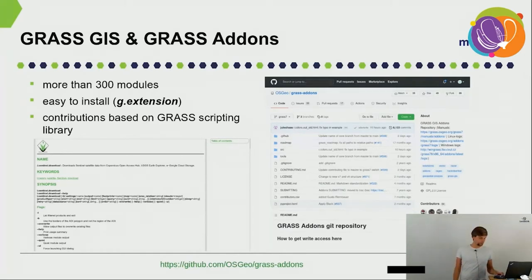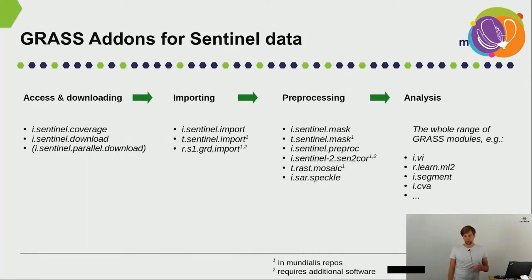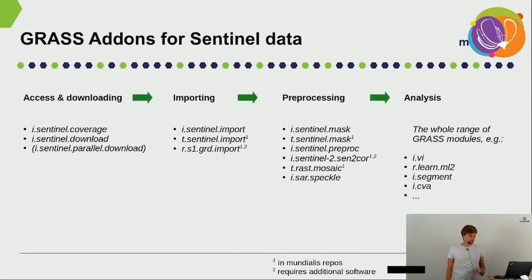This slide gives an overview of the existing GRASS GIS add-ons specified for Sentinel data. A lot of different people and institutions are contributing and developing these add-ons. They can be grouped into add-ons focusing on: access and download of Sentinel data, importing of Sentinel data, pre-processing of data, and analysis — although the last point is not really specific to Sentinel data, because once you've imported and pre-processed your data in GRASS GIS, the whole range of GRASS GIS modules is available to you. Most of these add-ons are available in the GRASS add-ons repository and some are on mundialis repositories, but in any case they are publicly and openly available.